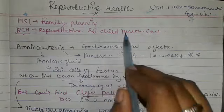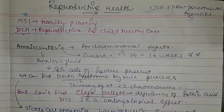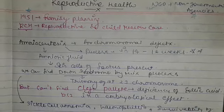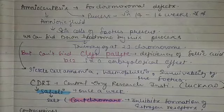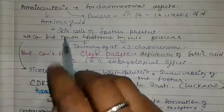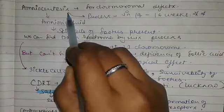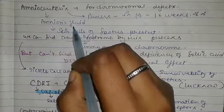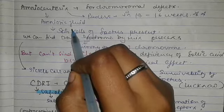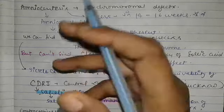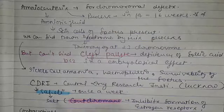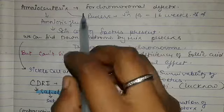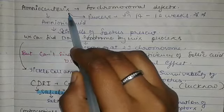RCH stands for Reproductive and Child Health Care. Now, amniocentesis — every year there is a question about it. What is amniocentesis? Determining the gender of a baby is illegal in India because it is misused. So amniocentesis for gender determination is illegal.